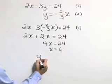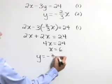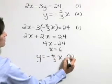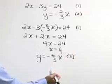Now let's solve for y and I'm going to use equation 2 which reads y is equal to negative 2 thirds x. And let's substitute our value for x.